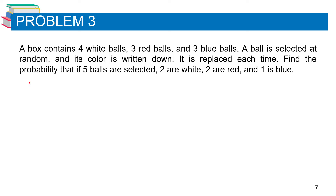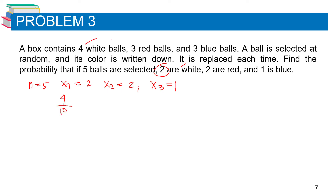For this problem, n equals 5, x₁ equals 2, x₂ equals 2, and x₃ equals 1. The total number of balls is 4 plus 3 plus 3, which equals 10. So p₁ (white) equals 4 over 10, p₂ (red) equals 3 over 10, and p₃ (blue) equals 3 over 10.